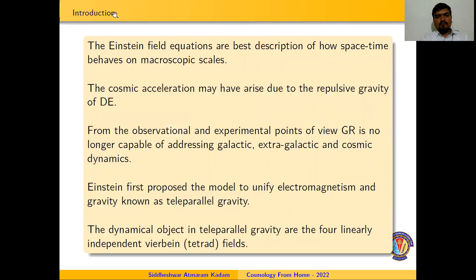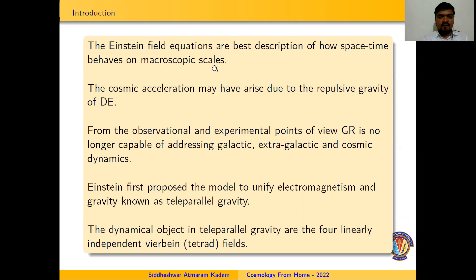Let us start our discussion with an introduction. As we know, Albert Einstein published the General Theory of Relativity in 1915, which gives the best description of how space-time behaves on microscopic scales. GR has advantages in describing several phenomena of gravity like gravitational waves, gravitational lensing, and time dilation, but also has certain limitations in describing phenomena like inflation, dark matter, and dark energy. To describe these phenomena, researchers are motivated to modify the General Theory of Relativity.